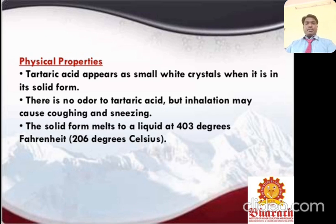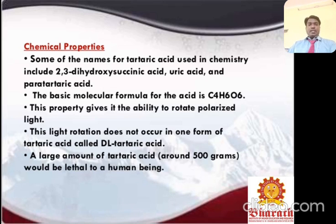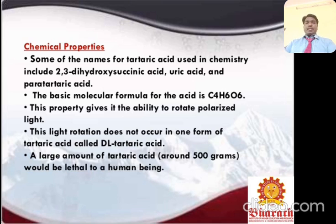Physical properties of tartaric acid: it appears as small white crystals in solid form. It has no odor, but the powder may cause coughing and sneezing. The melting point of the solid form is 171–174°C. Chemical names of tartaric acid include 2,3-dicarboxybutanedioic acid, racemic acid, and para-tartaric acid.